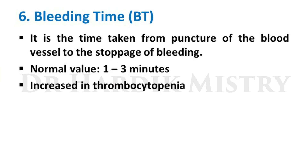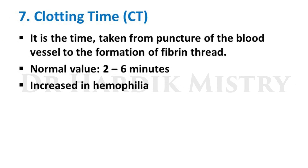Bleeding time (BT) is the time taken from puncture of a blood vessel to stoppage of bleeding. Normal value: 1 to 3 minutes; increased in thrombocytopenia, as bleeding time is mainly related to platelet numbers and function. Clotting time (CT) is the time from puncture of a blood vessel to formation of a fibrin thread. Normal value: 2 to 6 minutes; increased in hemophilia, as clotting time depends on availability of clotting factors. I hope this presentation will be very helpful for your hematology practical viva. All the best.